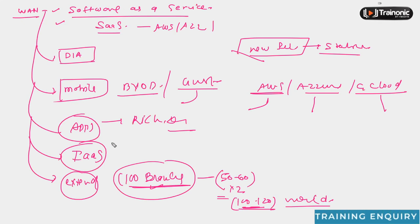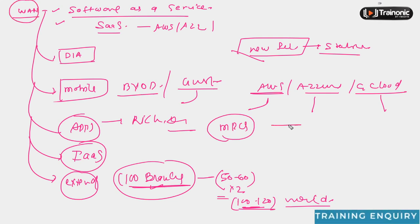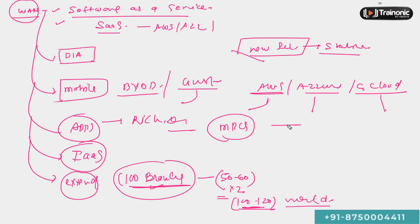MPLS is also not a very cost-effective solution. Using MPLS as a WAN service to connect data centers to branches and headquarters is expensive, adding another reason to look for alternatives.